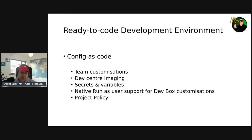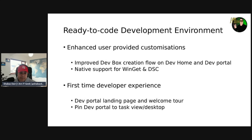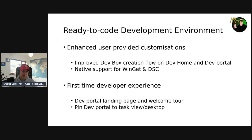Continuing with the ready-to-code roadmap, we have enhanced user-provided customizations. First is an improved Dev Box creation flow on the Dev Home developer portal — as a developer you'll be able to get started with Dev Box customizations using the UI to choose repositories to clone, or packages to install, without having to author a YAML configuration by hand. There's also native support for Winget and DSC, so all Dev Boxes will be able to use Winget and DSC to install packages and apply configurations without requiring a catalog to be attached.